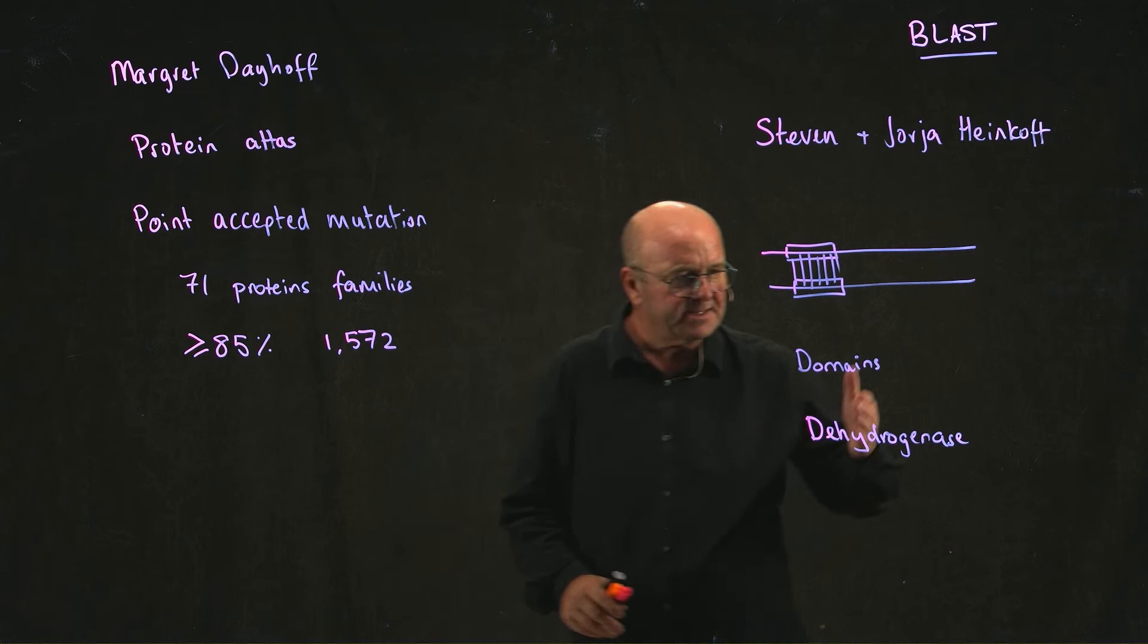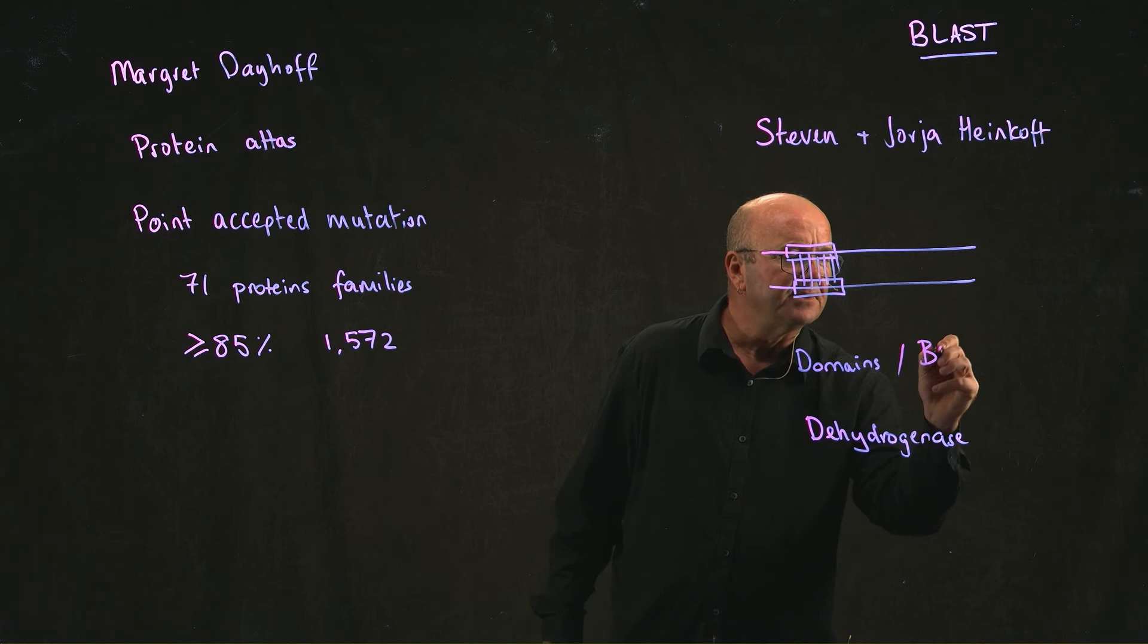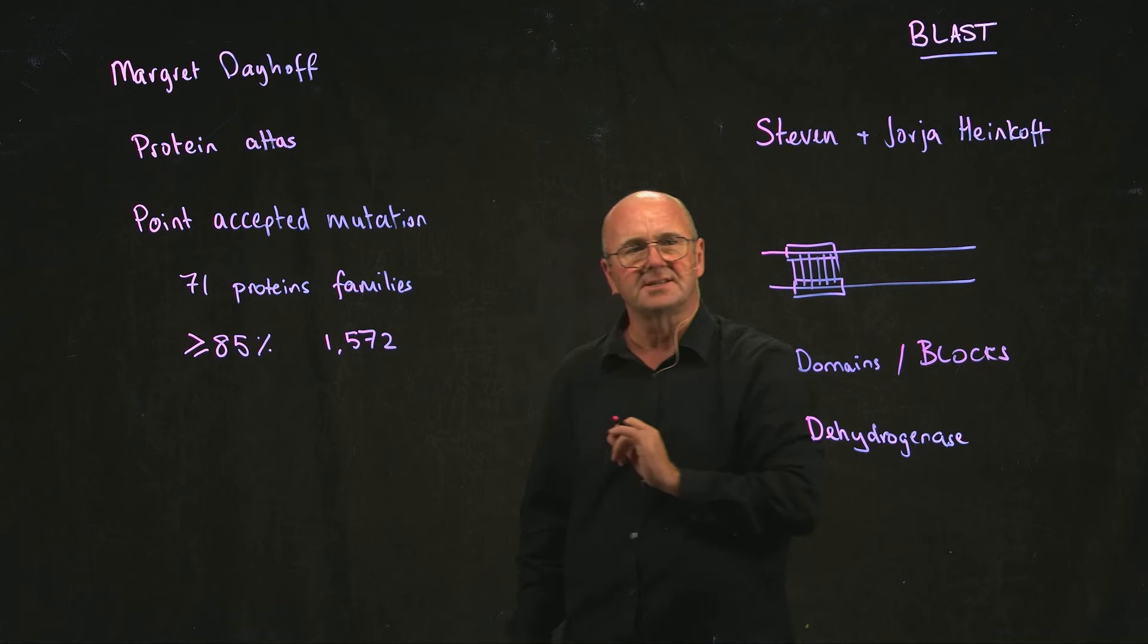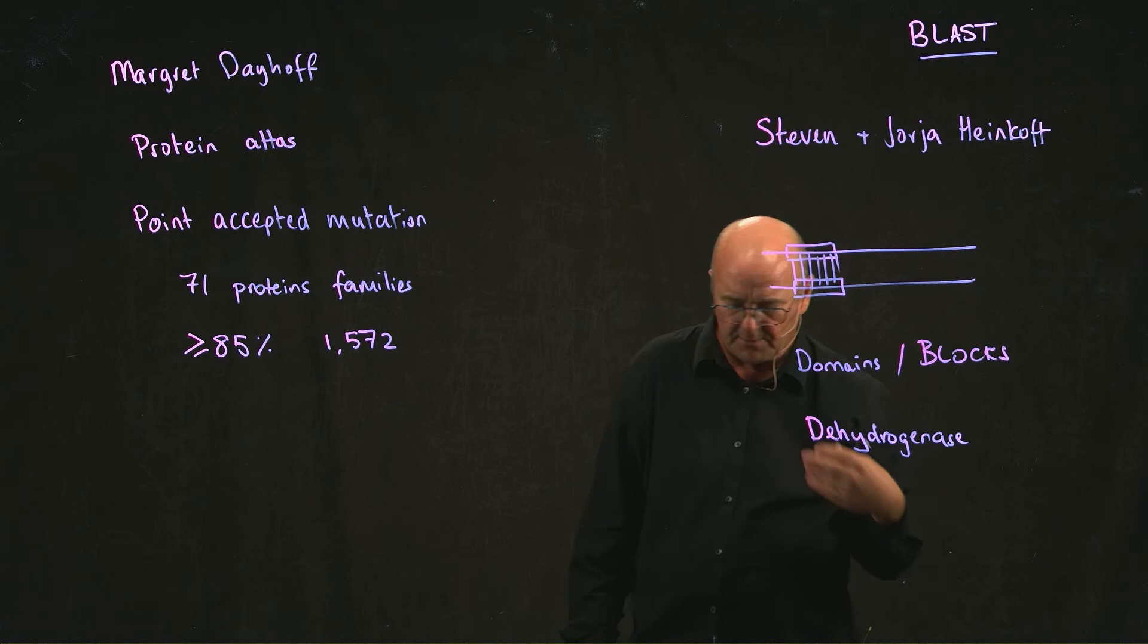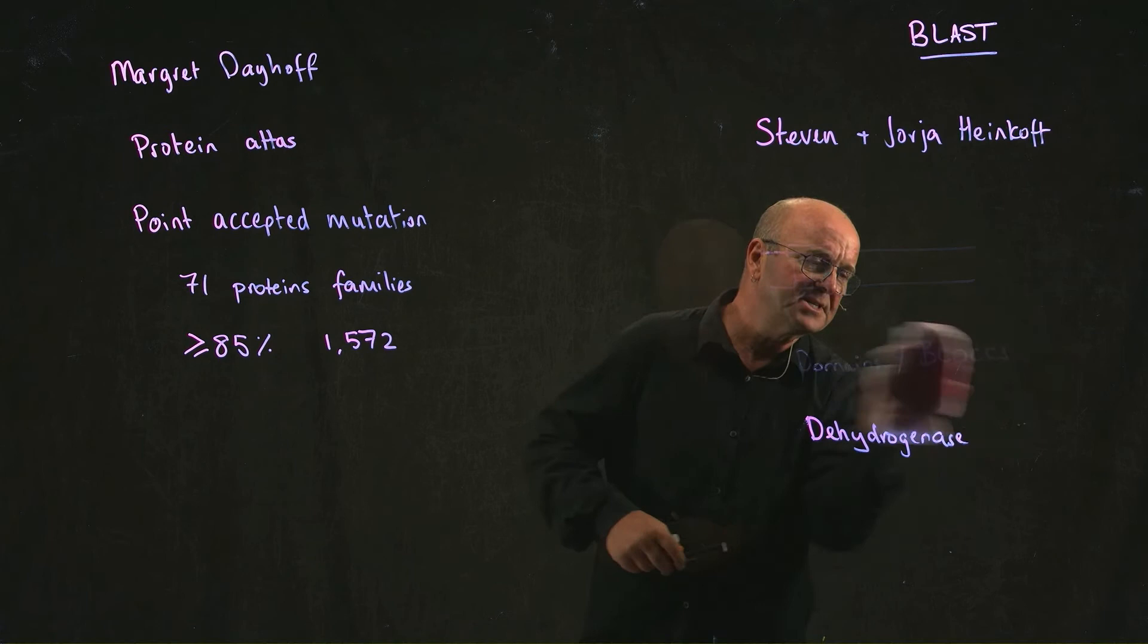What the Henikoff said is, hey, there are these domains, the rest of the protein may not be very similar, but there are regions that are really similar. So if we take, you can call them domains, or you can call them blocks. If we take blocks, we can basically do a very similar calculation as Margaret Dayhoff did, and we can come up with the frequencies with which amino acids change between different positions.